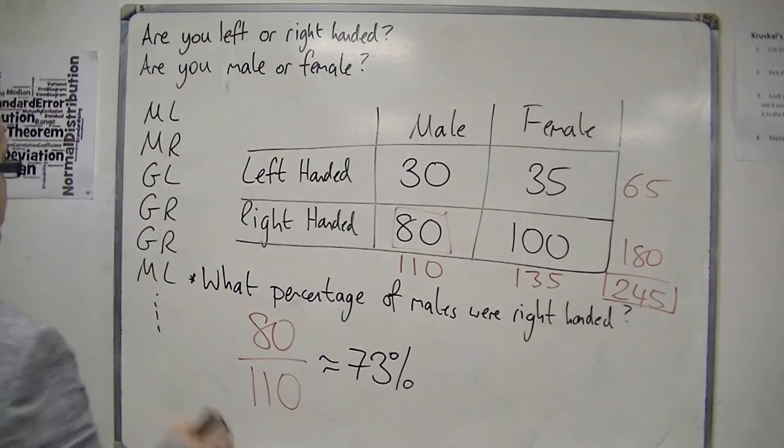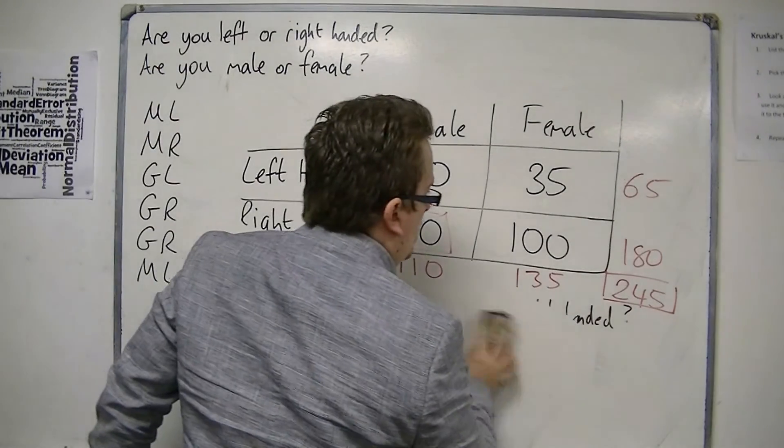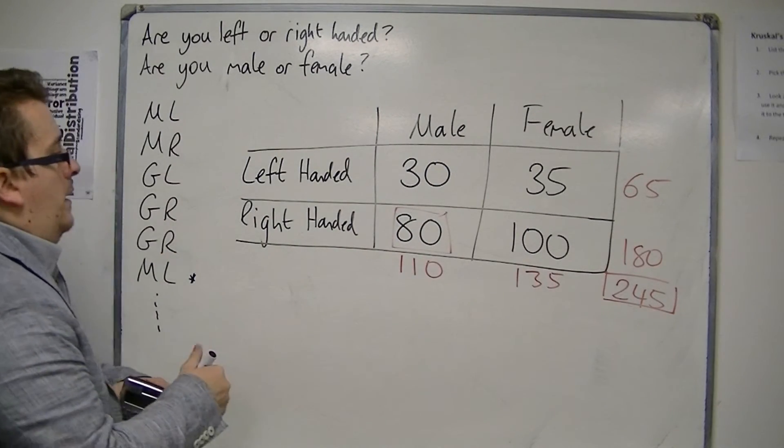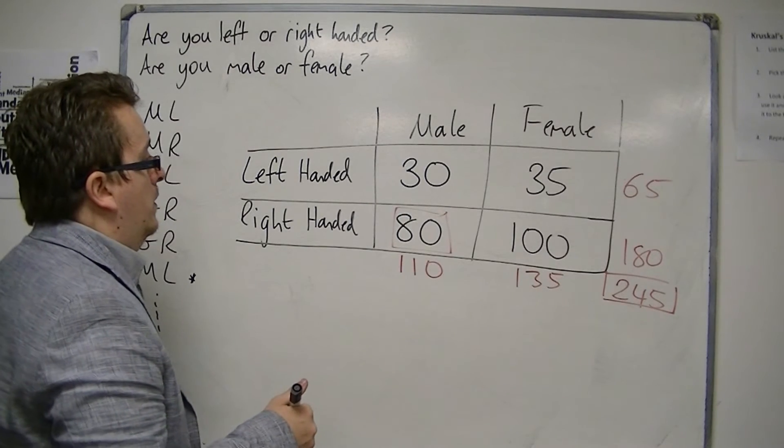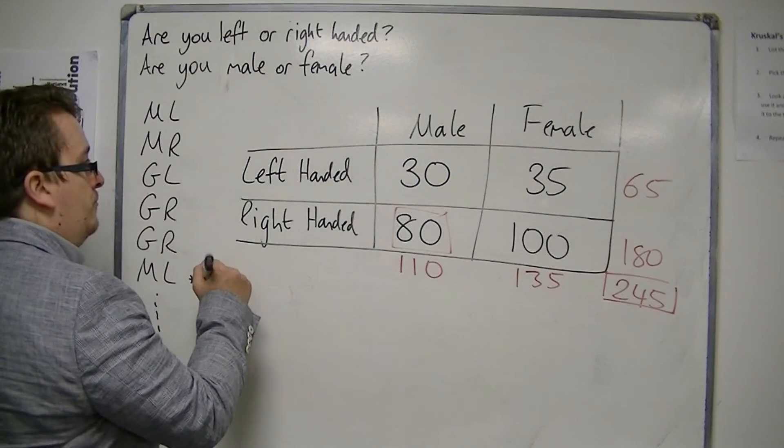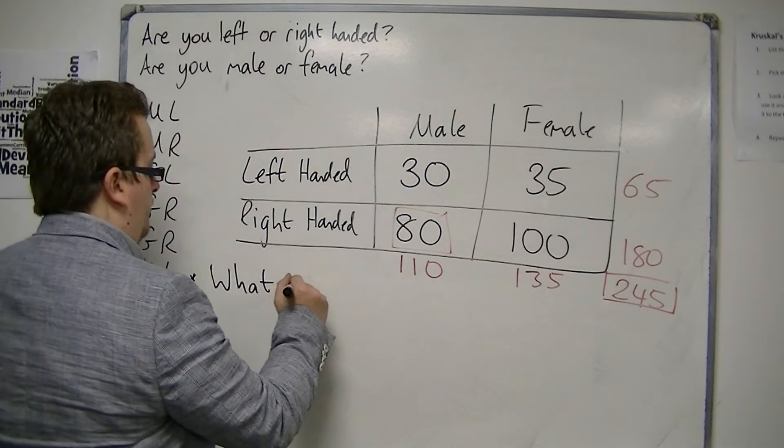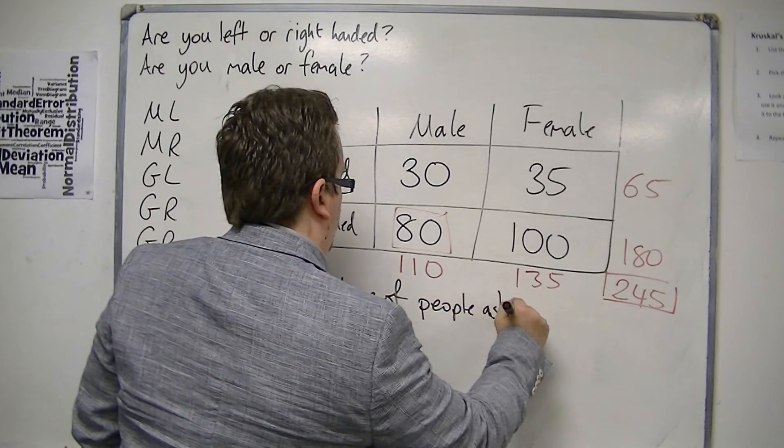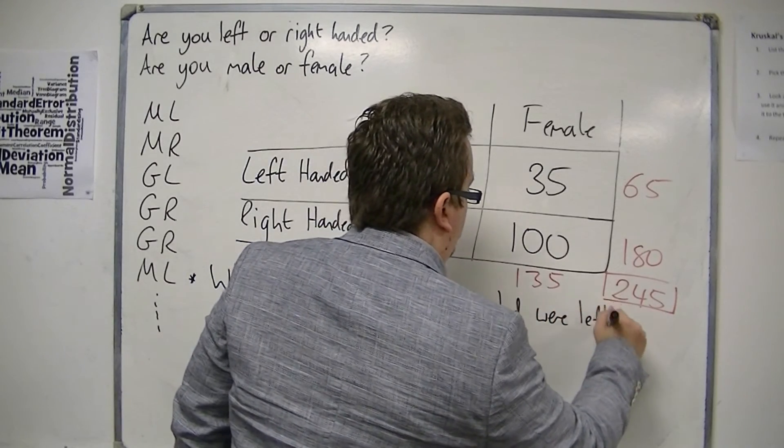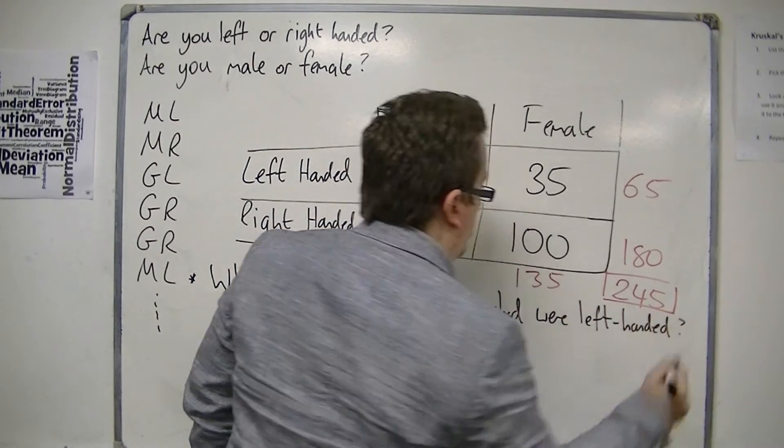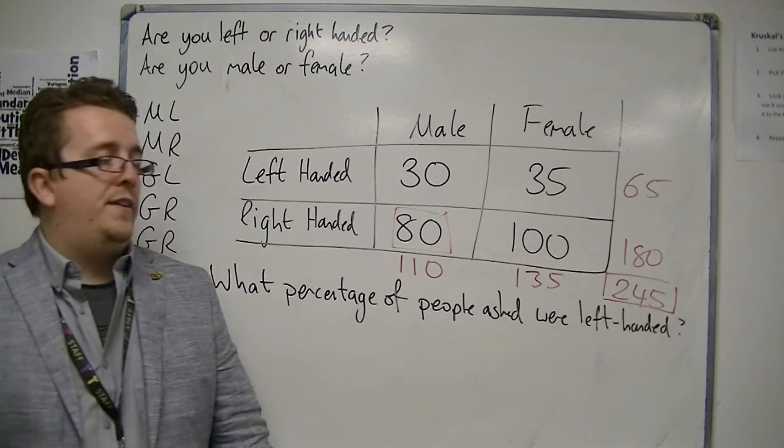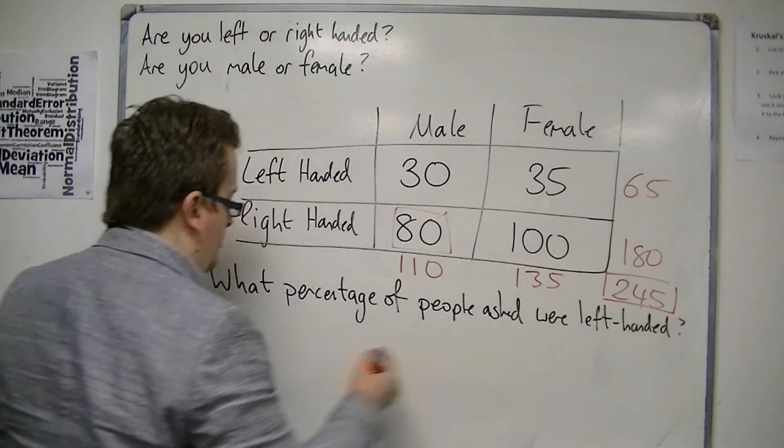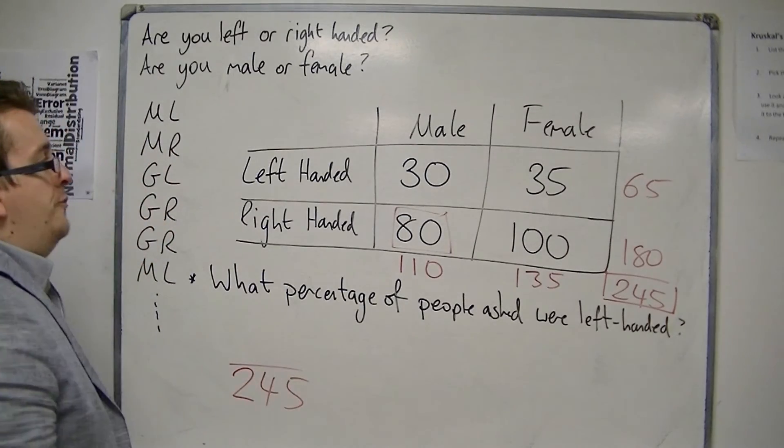Let's ask another question. What percentage of people asked were left handed? So, the number of people that were asked in total was 245. And of those 245, 65 were left handed.